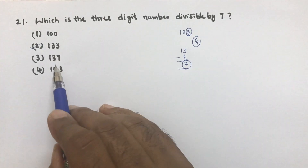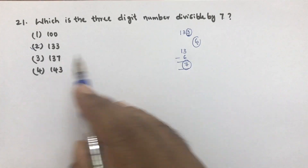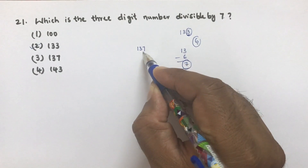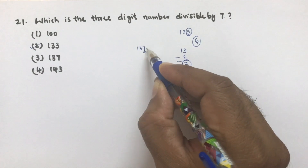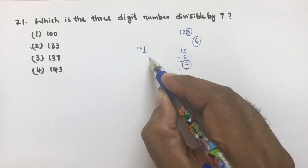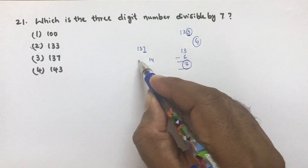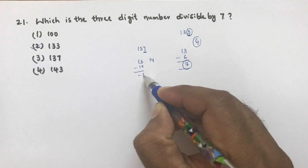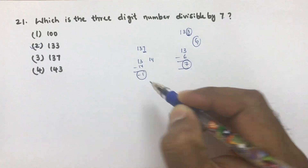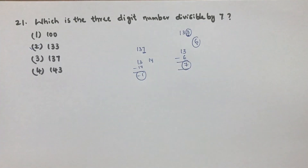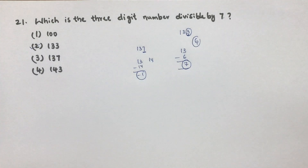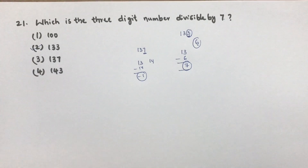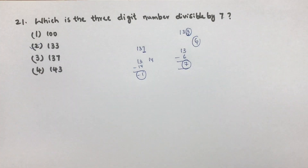Let me check one more: take 137. The rule is to take the last digit 7, double it to get 14, then 13 minus 14 is minus 1, which is not divisible by 7. So the correct option is 133.